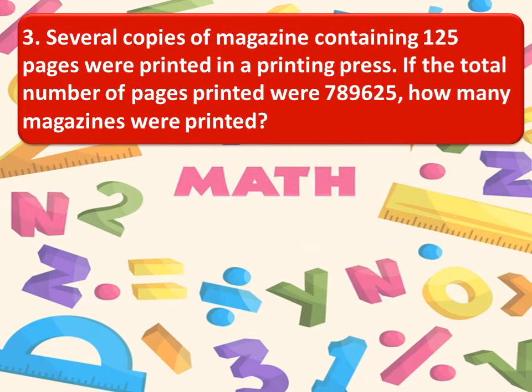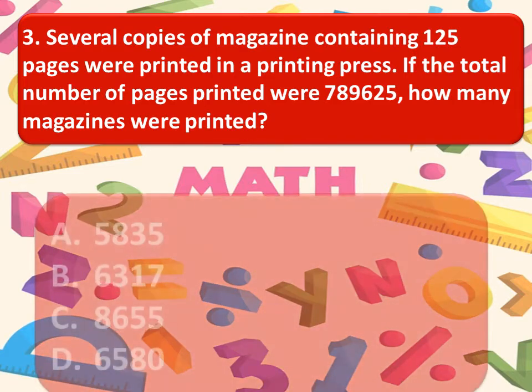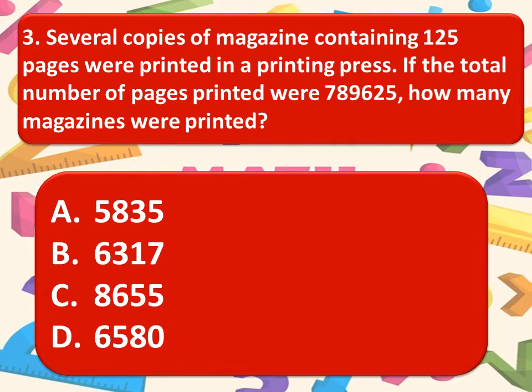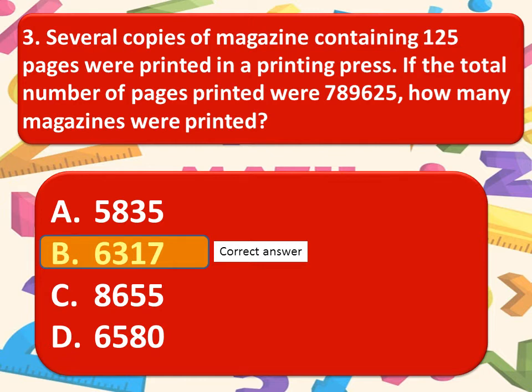The next question is several copies of magazine containing 125 pages were printed in a printing press. If the total number of pages printed were 7,89,625, how many magazines were printed? Here are the options. Option A, 5835. Option B, 6317. Option D, 8,655. Or option D, 6580. Think about the correct answer. And the correct answer is option B, 6317.